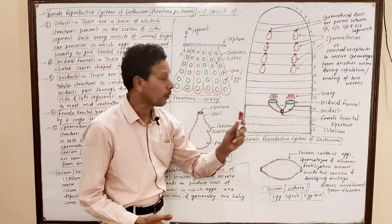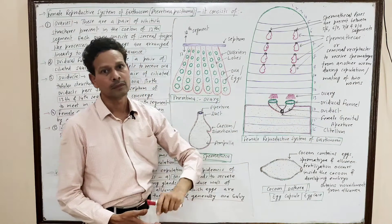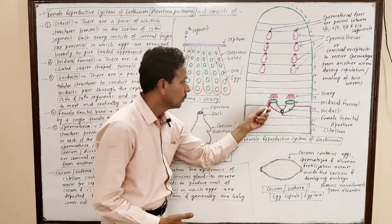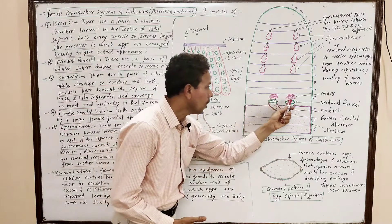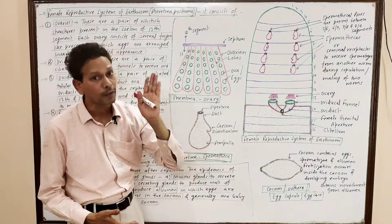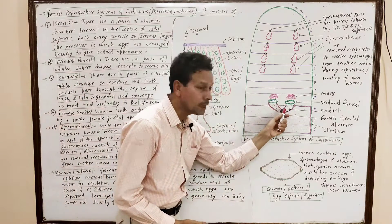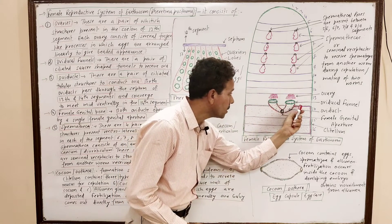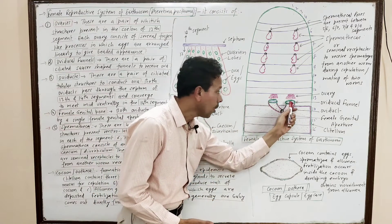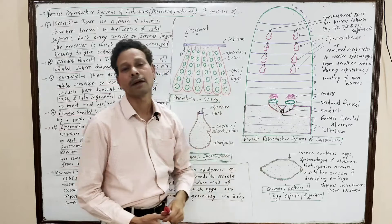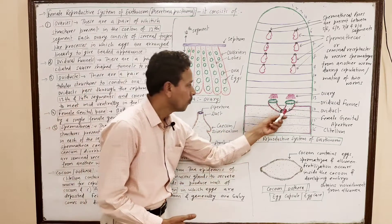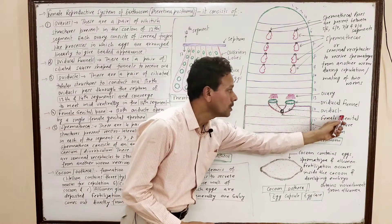The third part of the female reproductive system consists of a pair of oviducts, or egg ducts. These oviducal funnels start from the oviducal funnels and extend into the mid-ventral part of segment number 14, passing through the intersegmental septum between the 13th and 14th segments. Both oviducal funnels converge and meet in the middle part of segment 14, uniting and opening mid-ventrally by a female genital aperture.